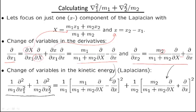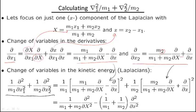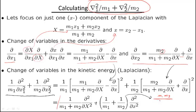Putting everything together, the X-component contribution yields a combination of two Laplacians. The Laplacian with respect to the center of mass involves the total mass in the denominator, and the Laplacian with respect to the relative coordinate involves the reduced mass μ = M1·M2 / (M1 + M2). Note: there should be a plus sign — no minus signs — that was a typo.